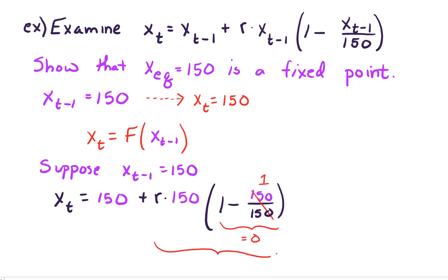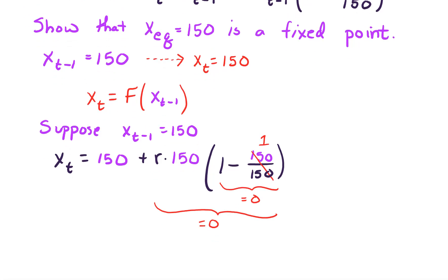In other words, r times 150 times 0, that is all 0. And working through the analysis we simply get x sub t equals 150. In other words, when x sub t minus 1 equals 150 goes in, what comes out is also 150. The logistic model doesn't move our population at all once we're at 150. So 150 is an equilibrium point.